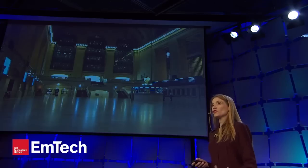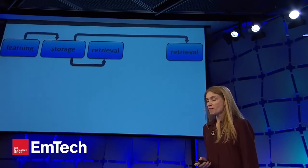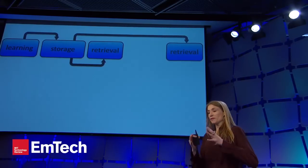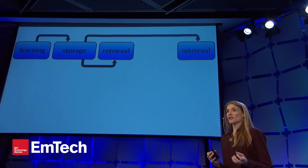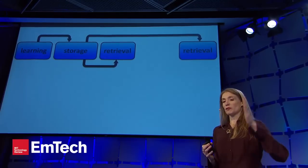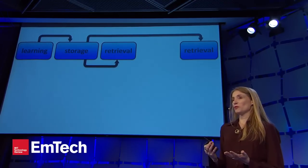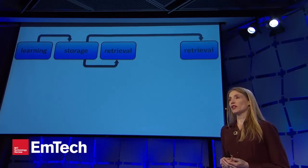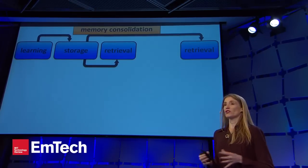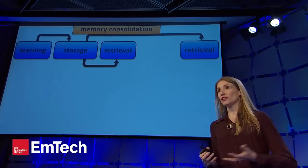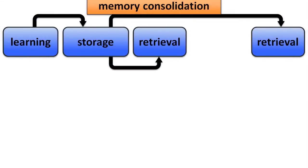How would we create a memory in the laboratory? We capture the process of how memory works. We learn something, then the memory is stored in the brain. Then theoretically we retrieve the same memory again and again. This process is called memory consolidation. Memories are consolidated, and then we have a long-term memory we can retrieve.